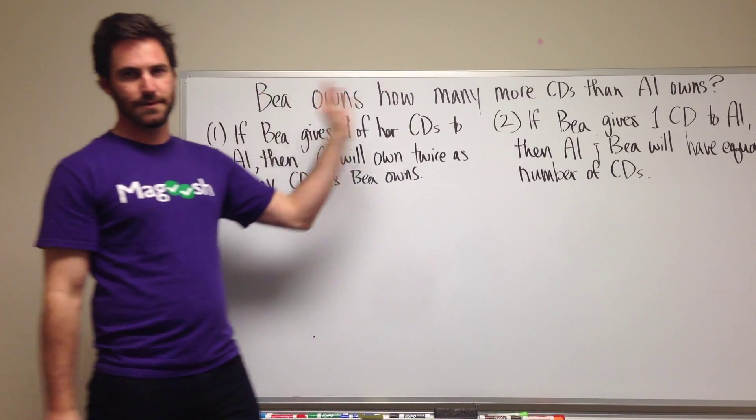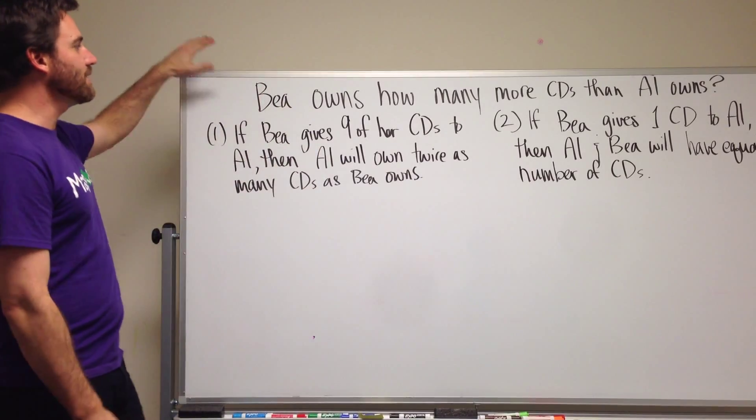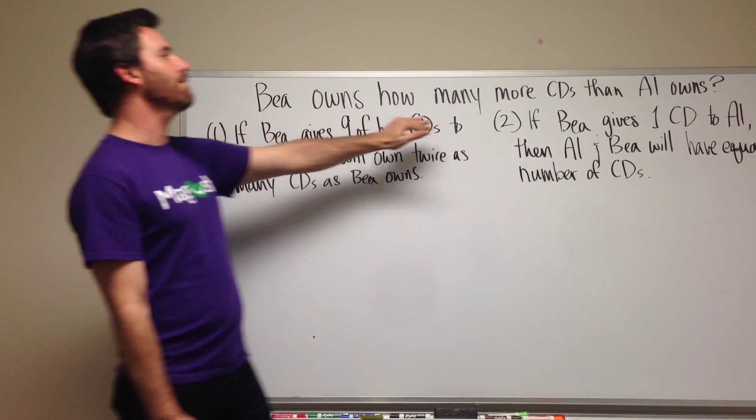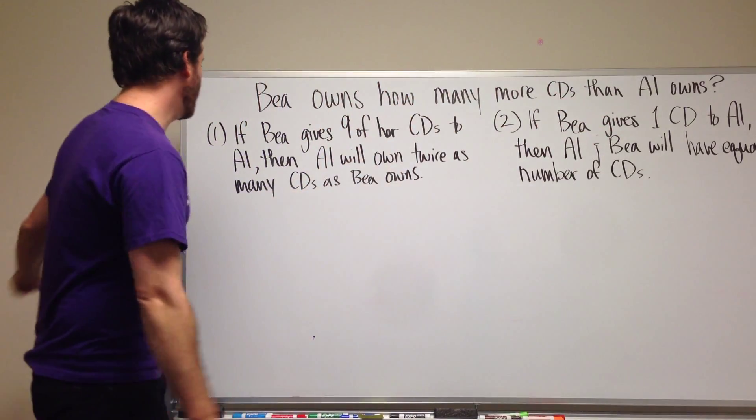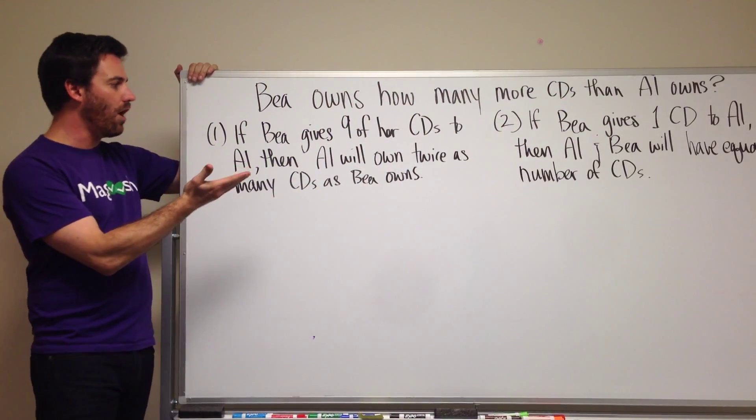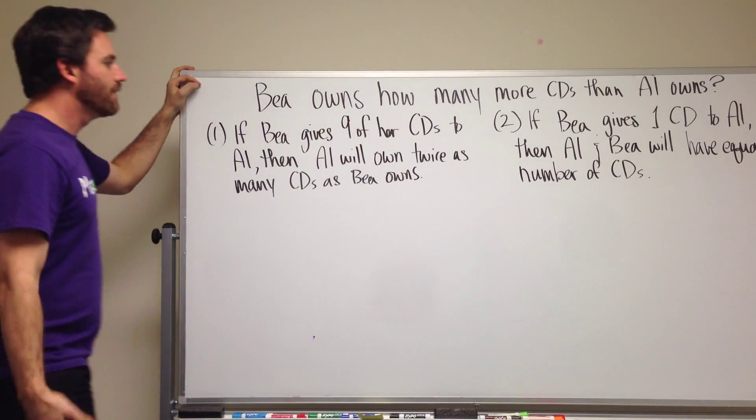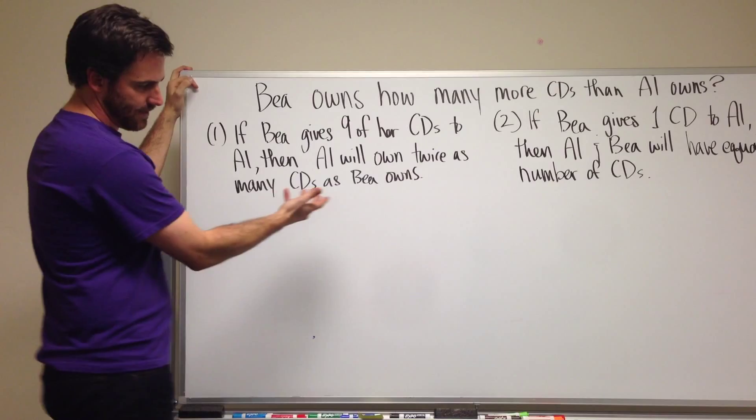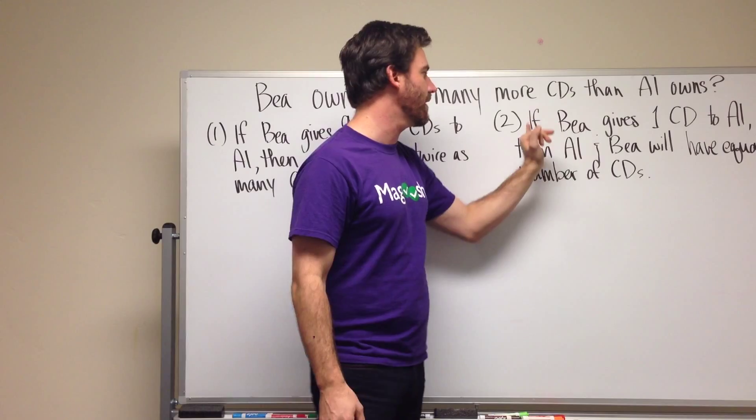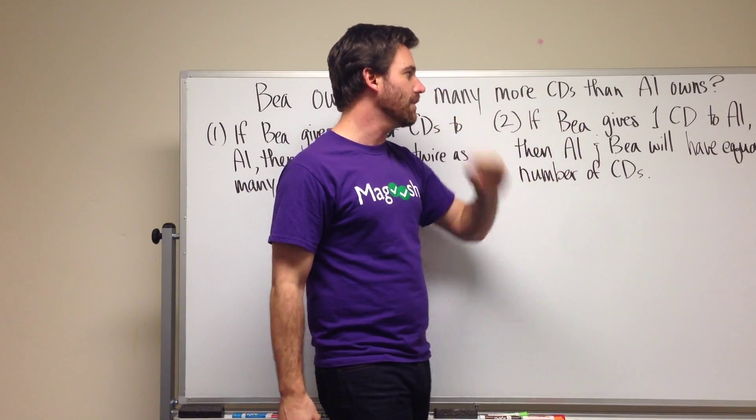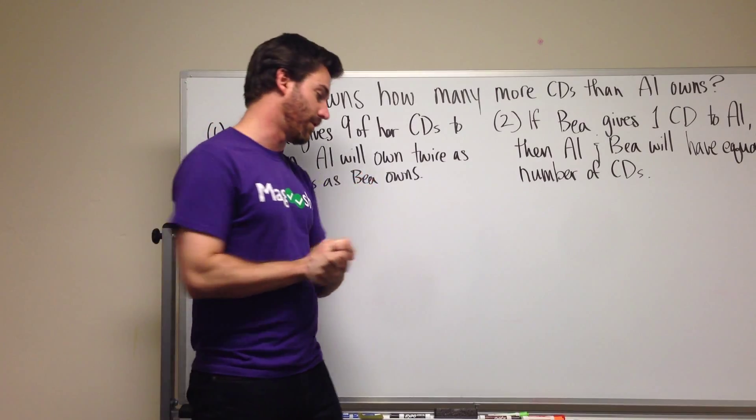First let me detail what's here and then we'll talk about the student's question. The question says Bae owns how many more CDs than Al owns? We have two statements. Statement one says if Bae gives nine of her CDs to Al, then Al will own twice as many CDs as Bae owns. Our second statement says if Bae gives one CD to Al, then Al and Bae will have an equal number of CDs.